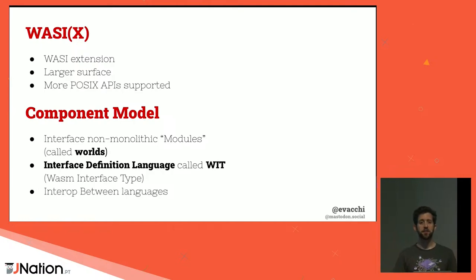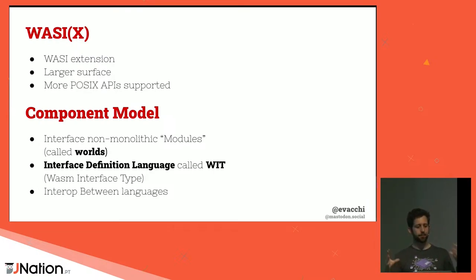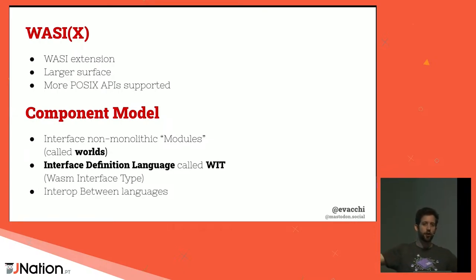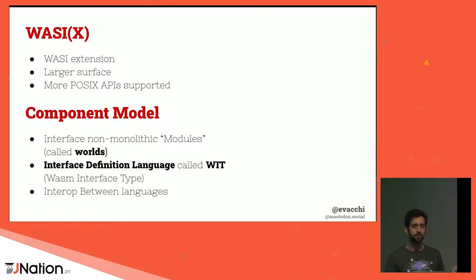Other initiatives include WASIX — a recent extension to WASI implementing more POSIX-like APIs — and the component model, a more future-oriented thing where people publish APIs in modules called 'worlds,' runtimes can support several worlds, and every module can decide which worlds to implement. They define an interface definition language called WIT, with the idea of paving the way for interop between languages.